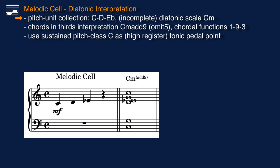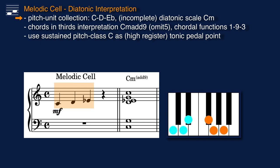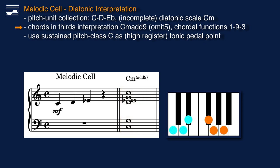The melodic cell is the set of three pitch class units C, D, E-flat, shown in staff notation and as cyan colored dots on the piano keyboard diagram. You may consider these pitches as three consecutive degrees from a C minor scale. Alternatively, when we consider chords in thirds, these same pitch units may be assigned chord functions root 1, 9 and 3 in an extended C minor chord with 5 omitted. That is the diatonic approach to our elementary cell. Along the same lines, we may use the tonic degree, pitch class C, as pedal point. These attempts may be rejected or accepted based on rational arguments or musical taste.